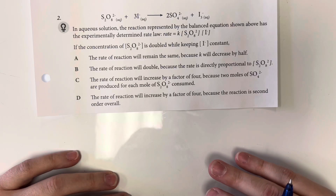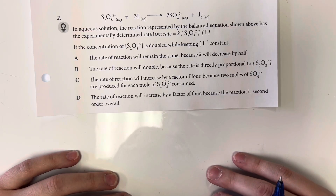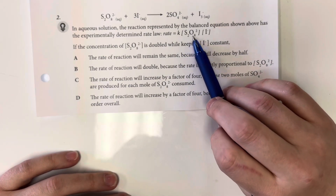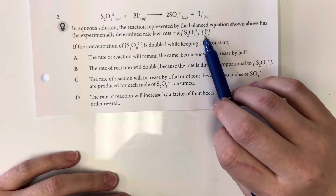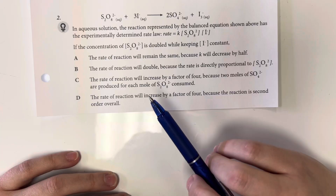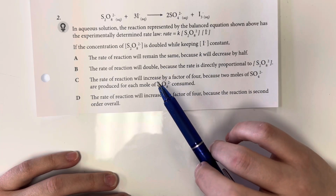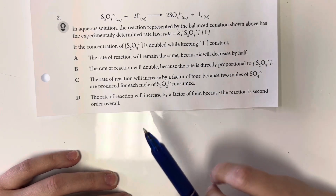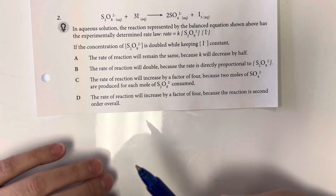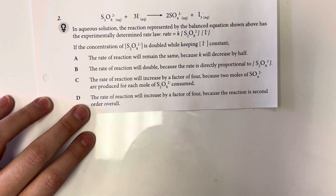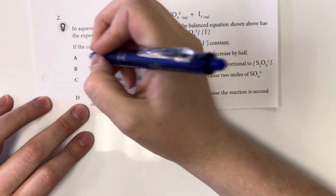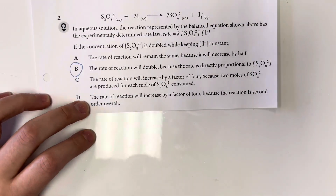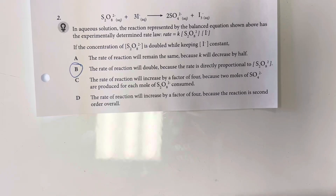In aqueous solution, the reaction represented by the balanced equation above has the experimentally determined rate law of K times the concentration of the sulfur compound multiplied by the concentration of iodine. The concentration of the sulfur compound is doubled while keeping iodine constant. Since K is constant, the reaction rate will double because the rate is proportional to the concentration of the sulfur compound.